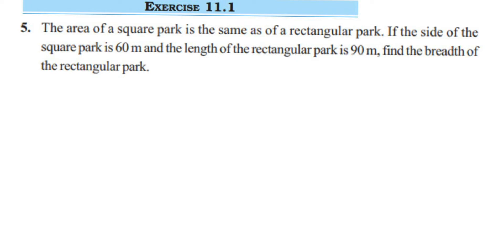Hey everyone, here is a question from Exercise 11.1, fifth question, from the perimeter and area chapter. The question is: the area of a square park is the same as a rectangular park. If the side of the square park is 60 meters and the length of the rectangular park is 90 meters, find the breadth of the rectangular park.